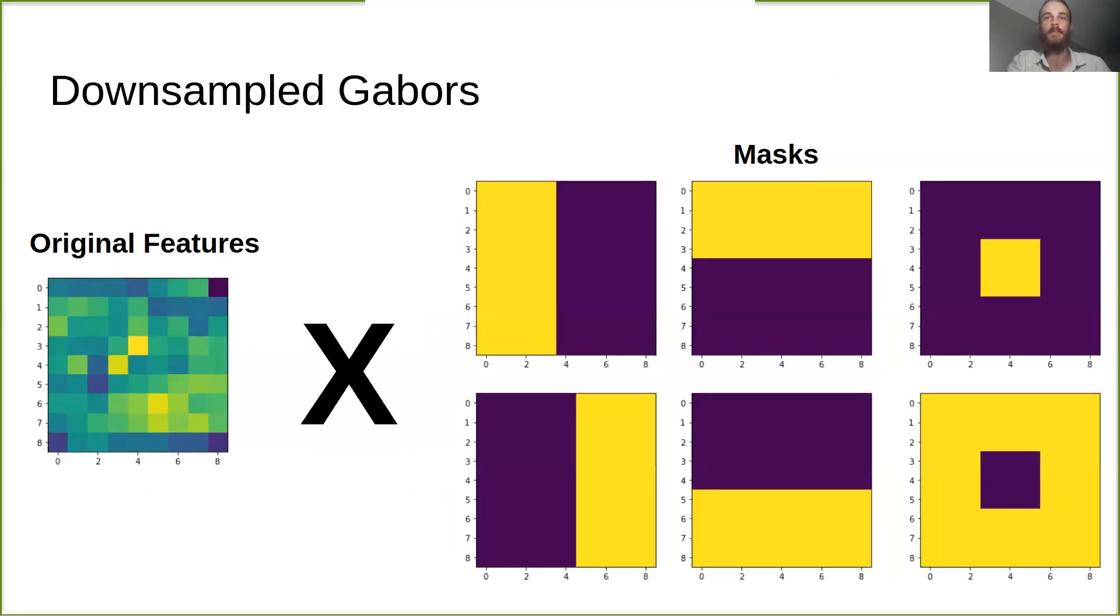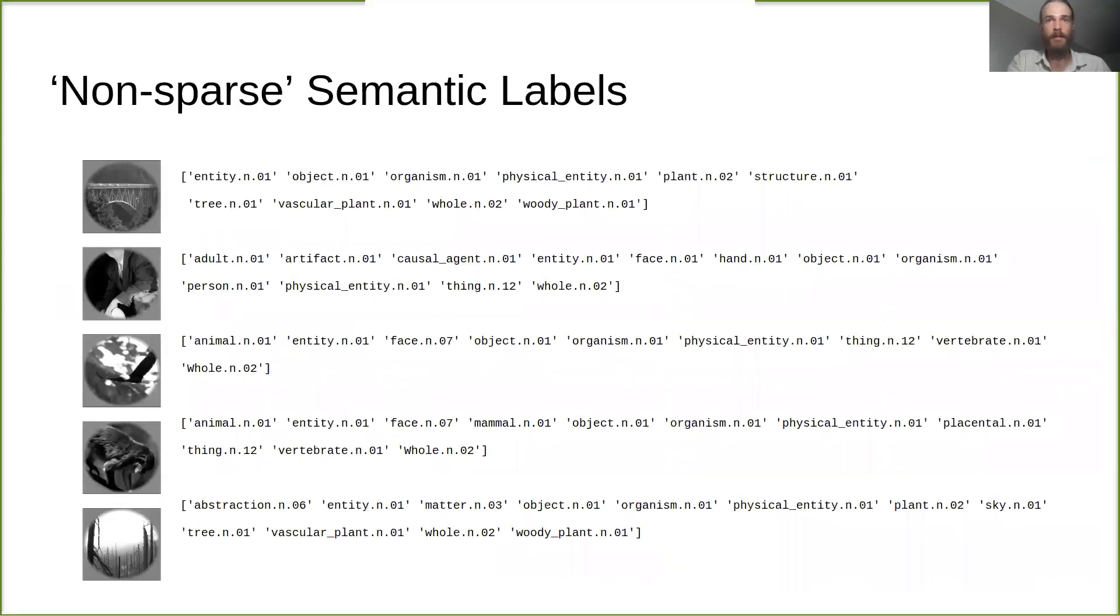To this end, we generated simplified versions of each of our sets of features. We averaged our Gabor features in different regions of the visual field. Similarly, we used our semantic labels and the WordNet hierarchy to extract 32 different high-level semantic features, which were present in at least 10% of the training images.